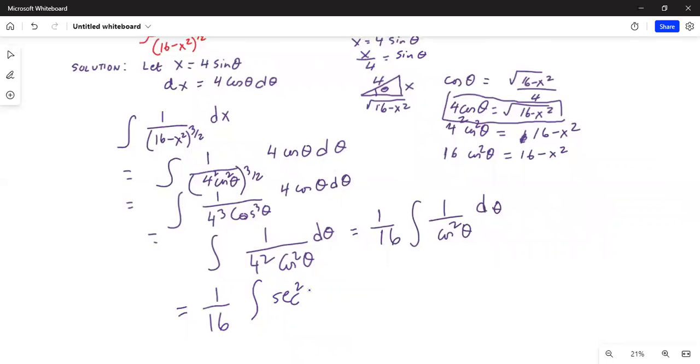This is equal to 1 over 16 integration of secant squared theta d theta, which is 1 over 16 tan theta plus c. Now we can write the expression for tangent theta from the right angle triangle. It's opposite side by adjacent side, so tangent of theta is x divided by square root of 16 minus x square plus c.